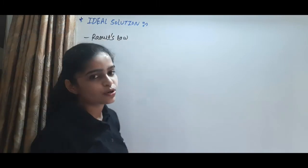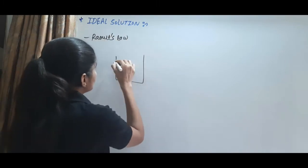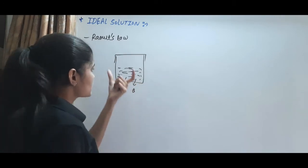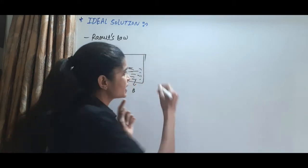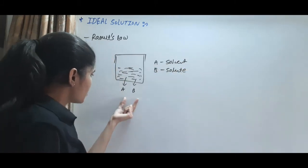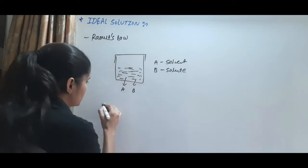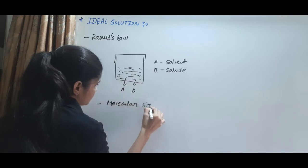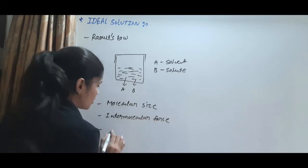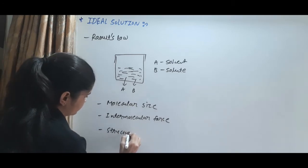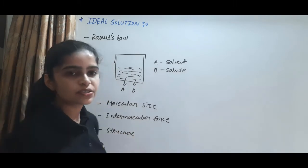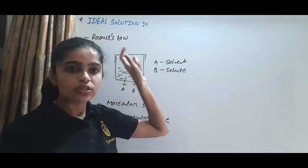To define the ideal solution, consider a beaker — a closed system filled with two liquids, A and B. A is the solvent and B is the solute. One condition applied to A and B is identical molecular size, identical intermolecular forces or intermolecular structure, and identical structure. When A and B have all three identical properties, the solution obeys Raoult's law.